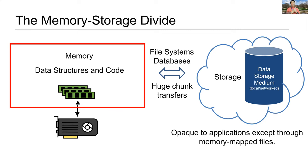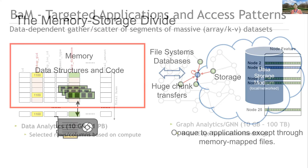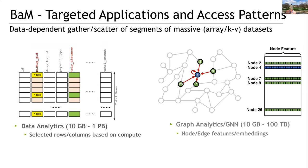Those conventional wisdom assumptions led to what we call the memory-storage divide. There are really two worlds: one is the storage system where the data resides, and the other is the memory and processor side. Every time we need to access any data in storage we need to load it from storage into memory before the processor can address individual elements, treat it as a data structure, and operate on it.